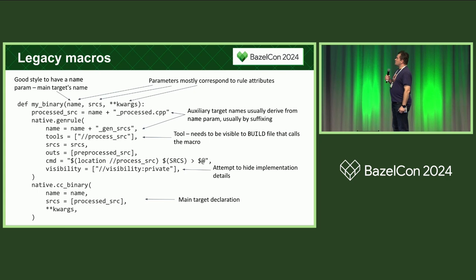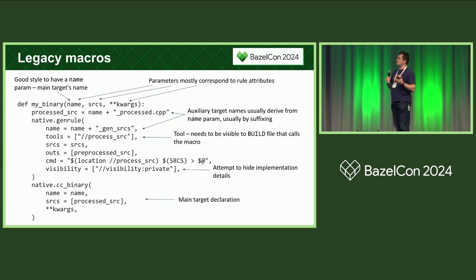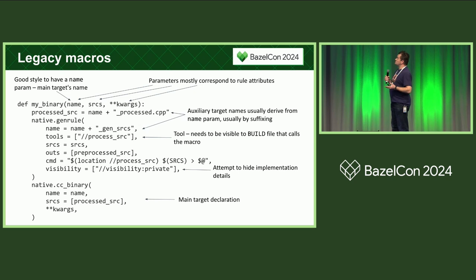Typically, those auxiliary targets are considered implementation details, and the macro tries to hide them by giving them private visibility. I will explain later why this doesn't quite work. We also see that the genrule calls a tool, and this tool would need to be visible to the build file that calls the macro.